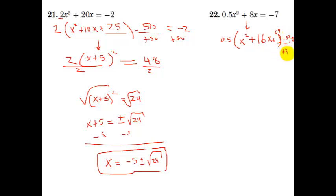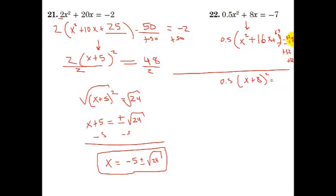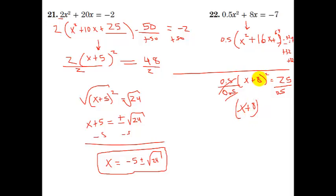Since 64 is inside parentheses being multiplied by 0.5, 0.5 times 64 is 32 — so we need to subtract 32 outside to balance. Add 32 to both sides: we get 0.5 times (x + 8) squared equals negative 7 plus 32, which is 25. That's great because 25 is a perfect square. But we need to divide by 0.5 on both sides.